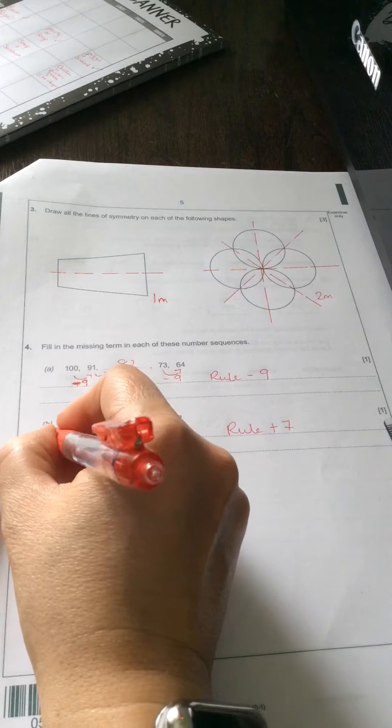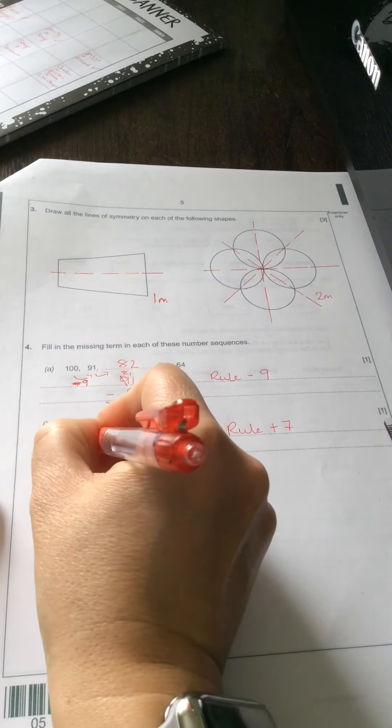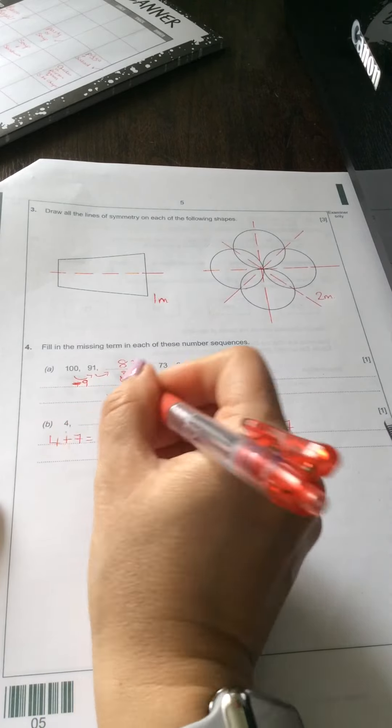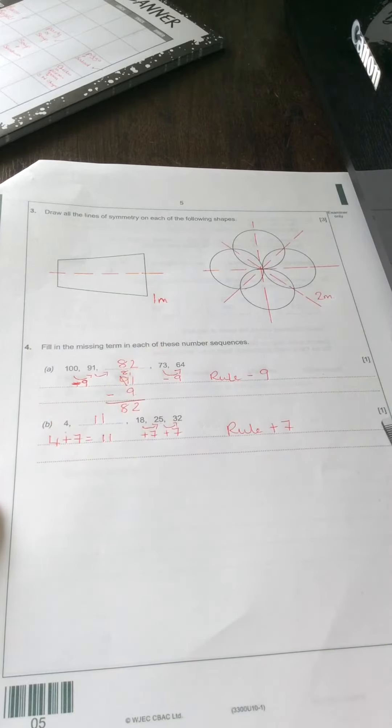So what I need to do now is 4 add 7 to get the missing number. 4 add 7 is 11. So 11 is the missing number here.